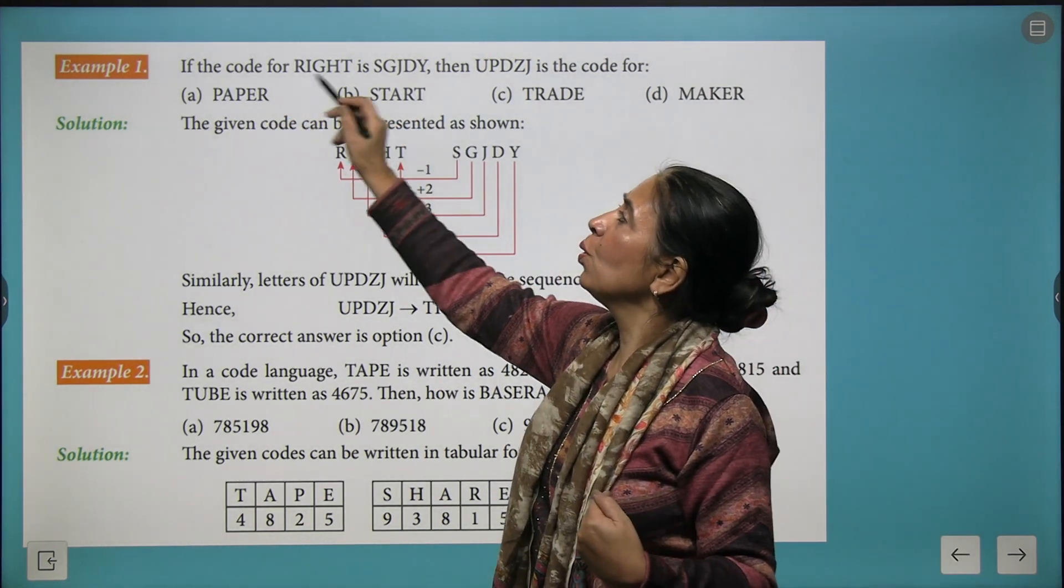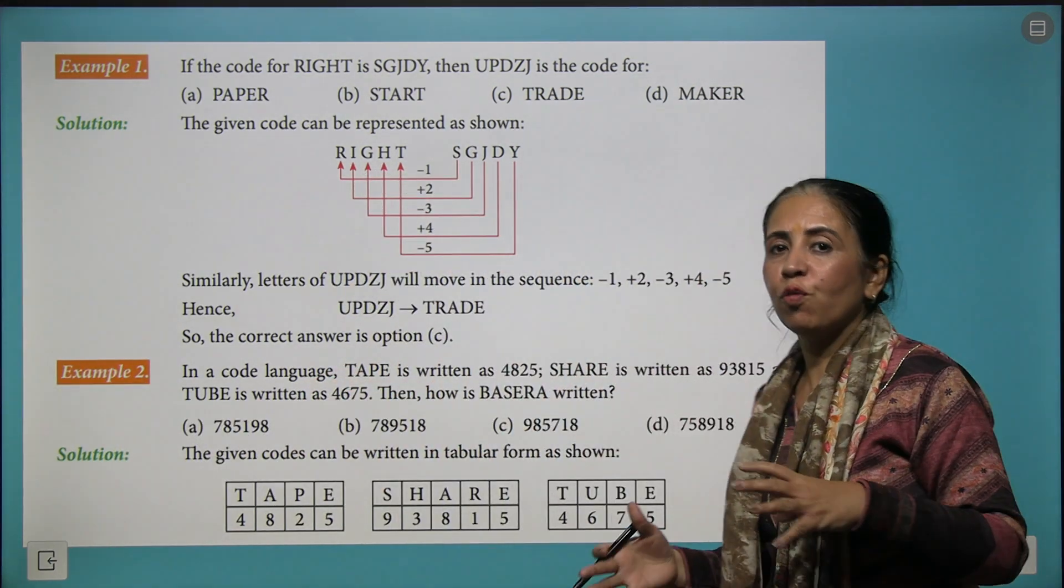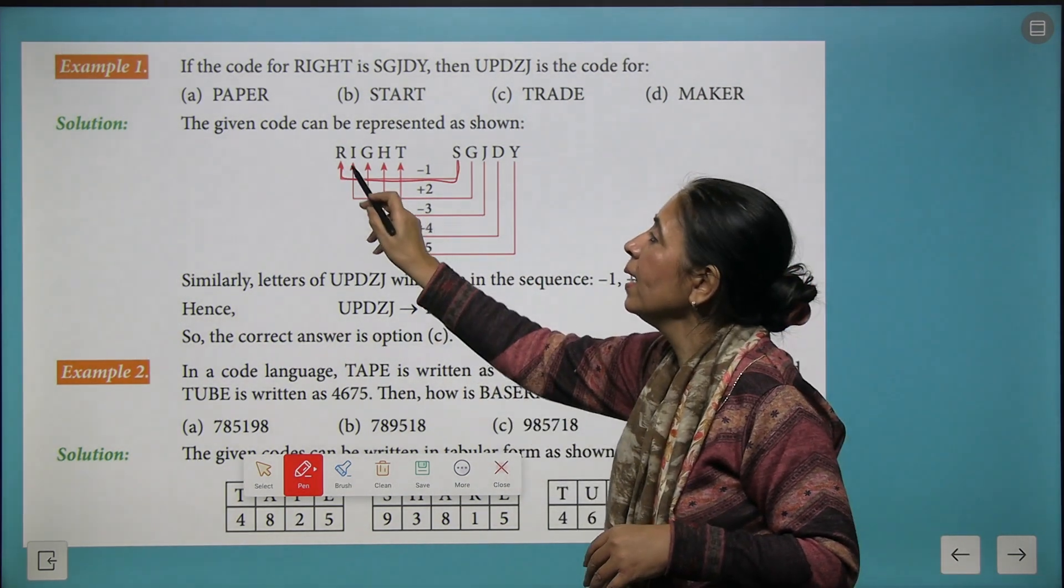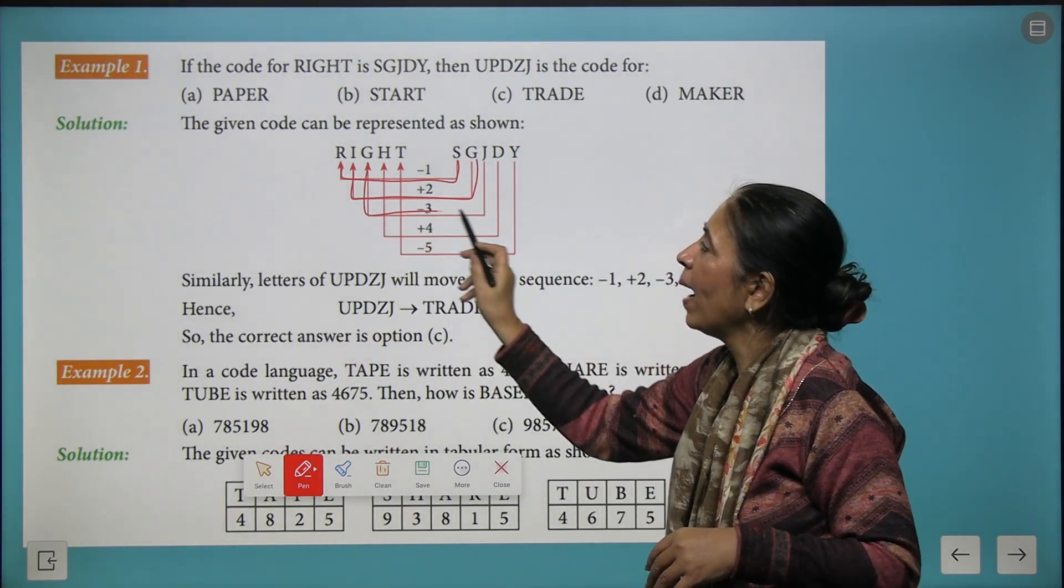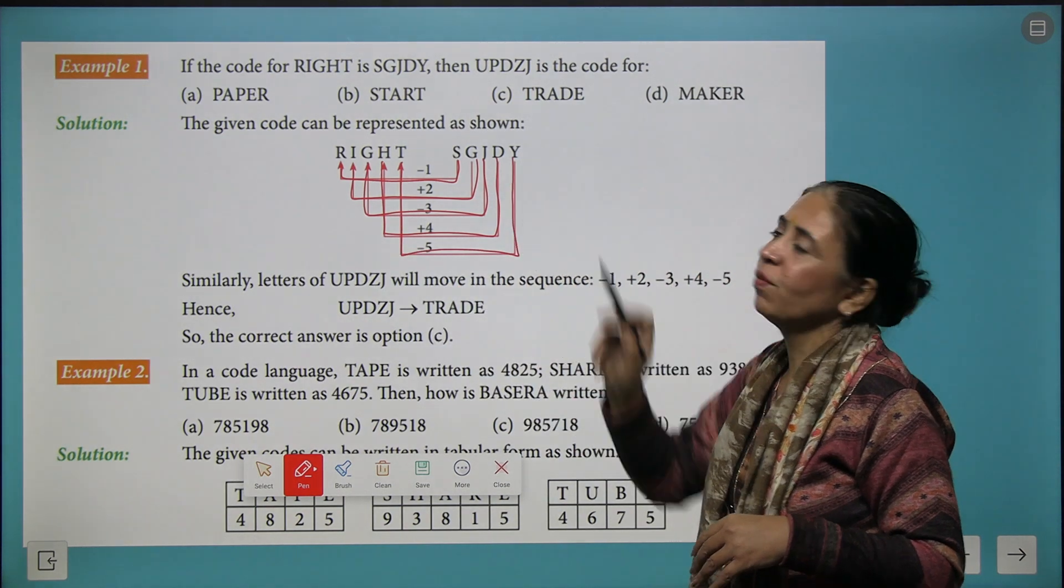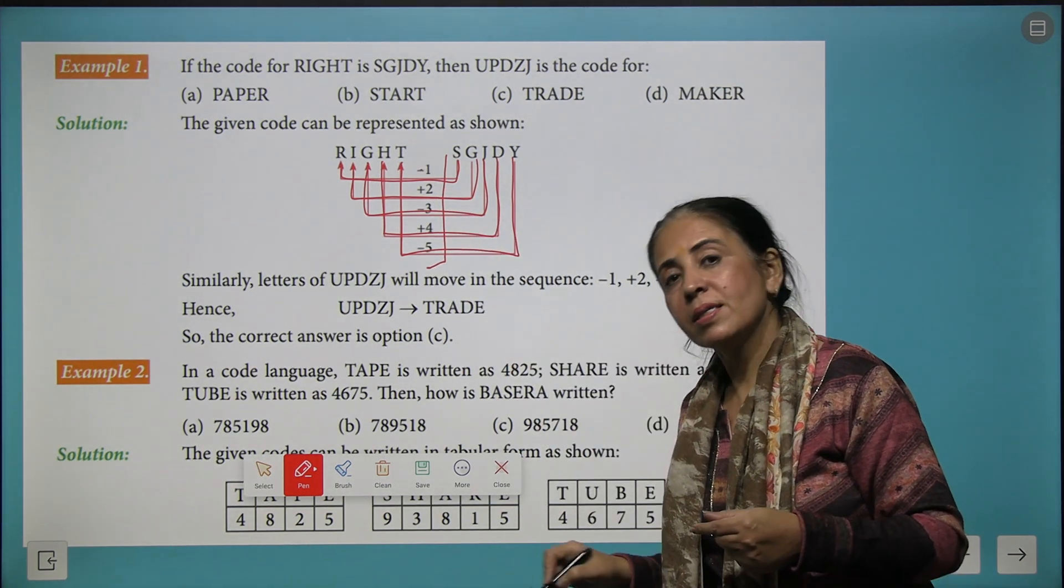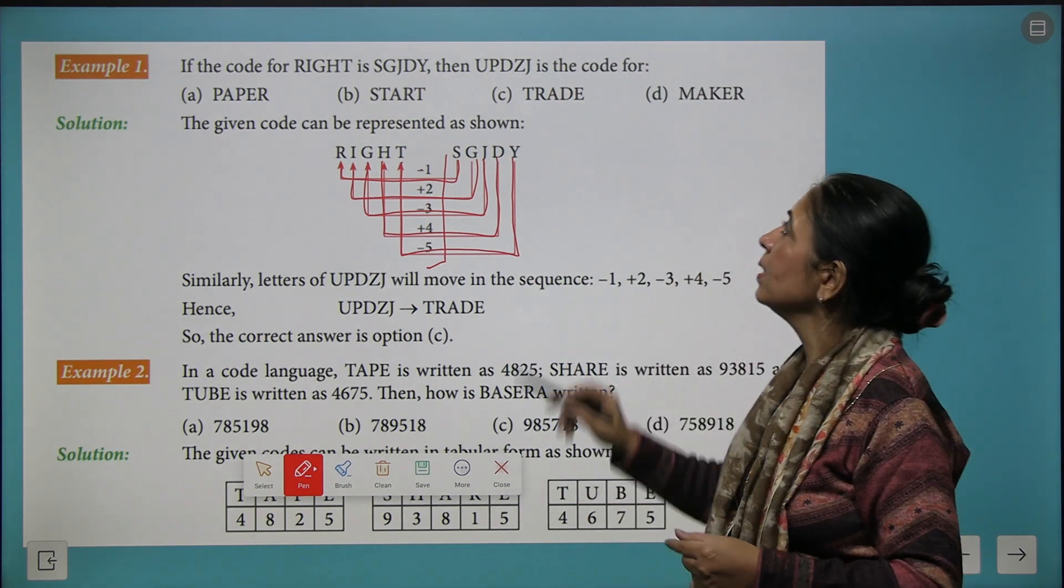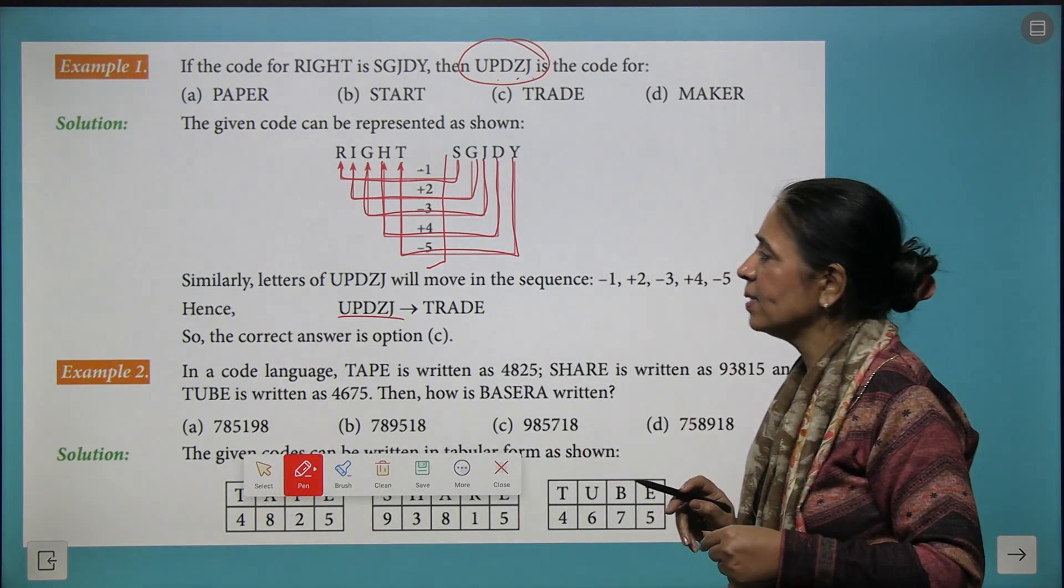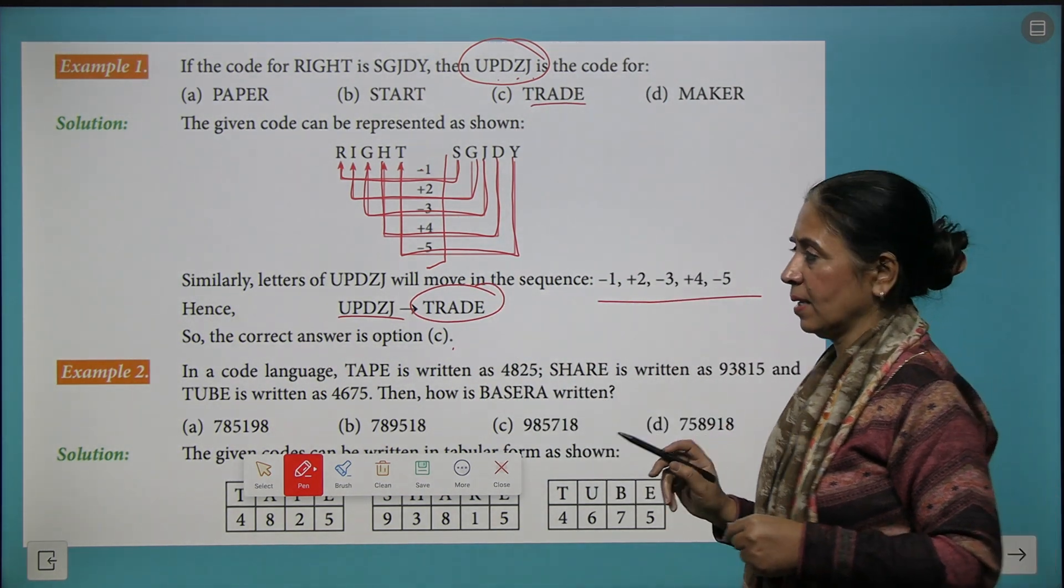Now let's look here. If the code for RIGHT is SGDJY, you need to first understand what pattern of code is created. So we saw that R minus 1 gives you S, then I plus 2 gives you G, then G minus 3 gives you J, H plus 4 gives you D, and T minus 5 gives you Y. That means numbers are increasing from 1 to 5, but one time it is increasing and another time it is decreasing. So we follow the same pattern and find the answer for UPDJY. The answer is STRAIGHT, and C is your right answer.